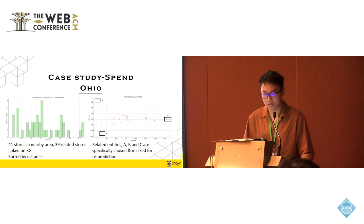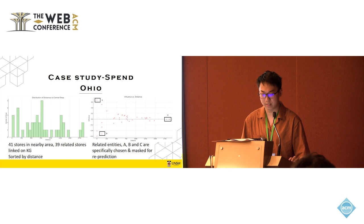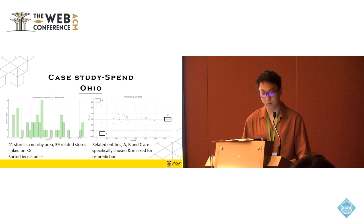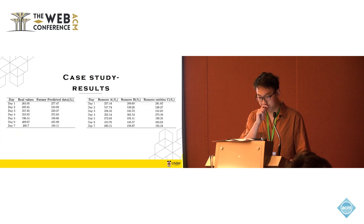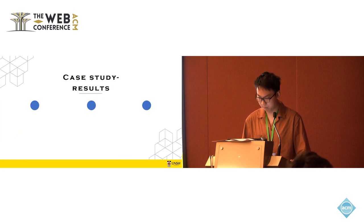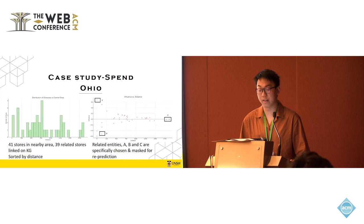So on the left, the x-axis represents the distance between related entities and the center one, and y-axis represents the number of entities falling in that distance range. And the figure on the right shows the influence values that are calculated and extracted from the SSKG. The y-axis represents the calculated influence in SSKG for every linked entity. Here we choose three groups of entities, like A, B, and C for further experiment.